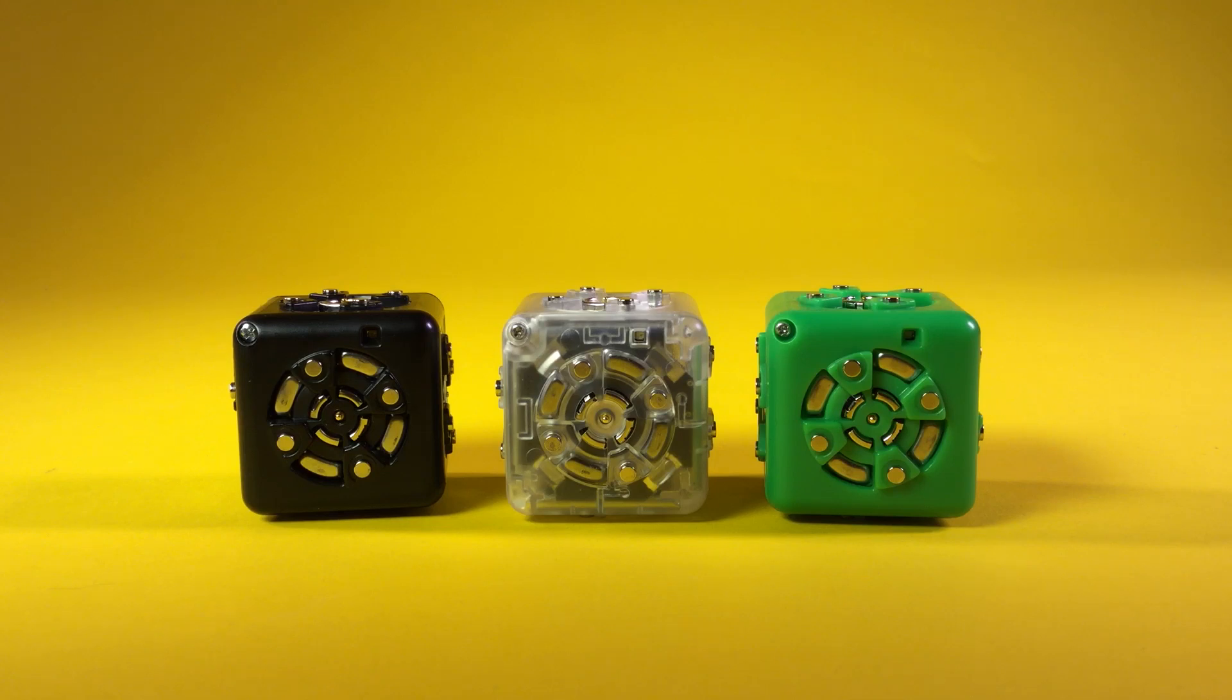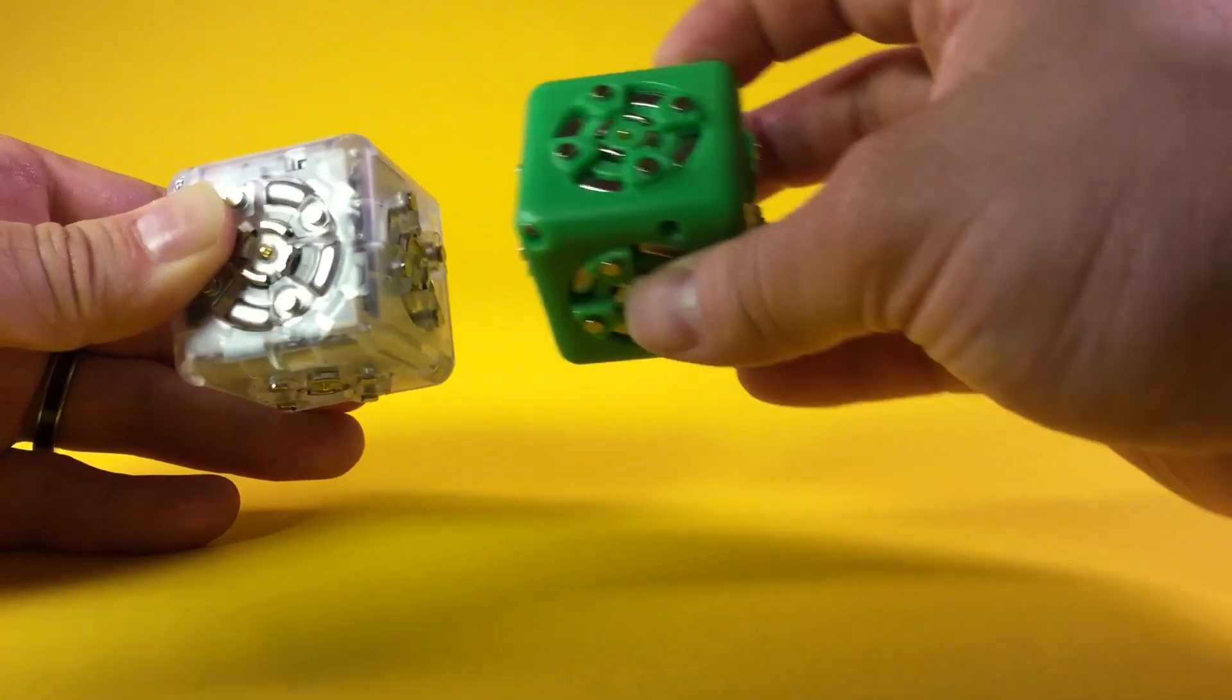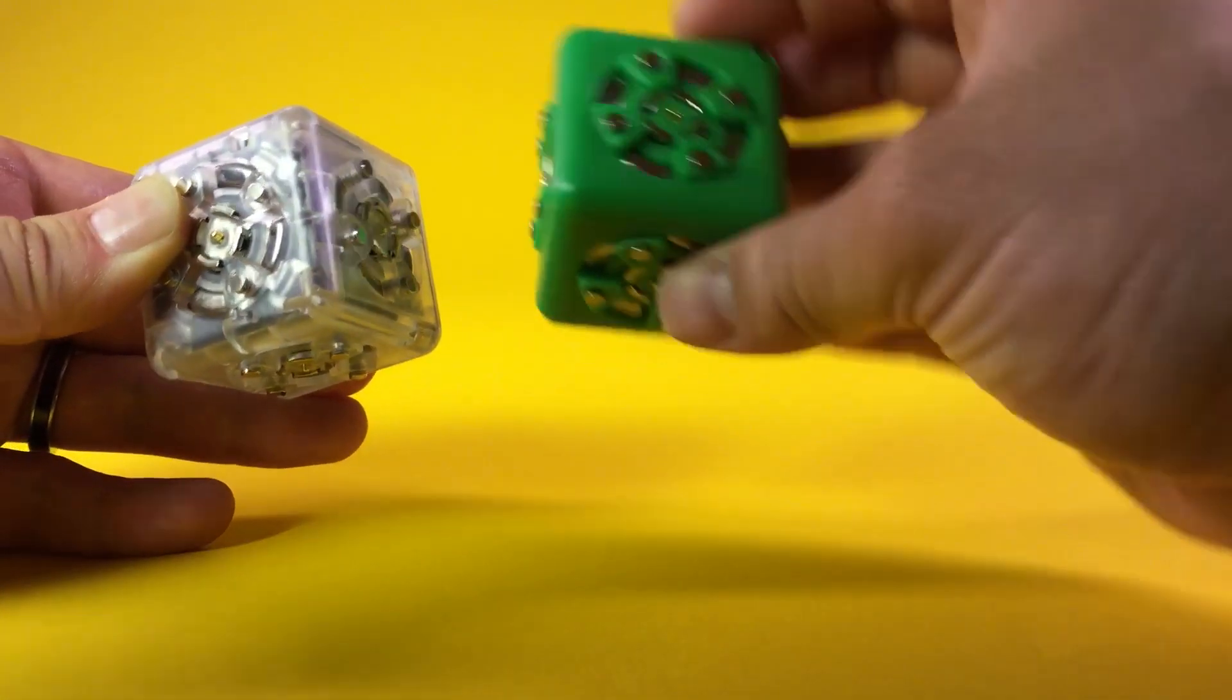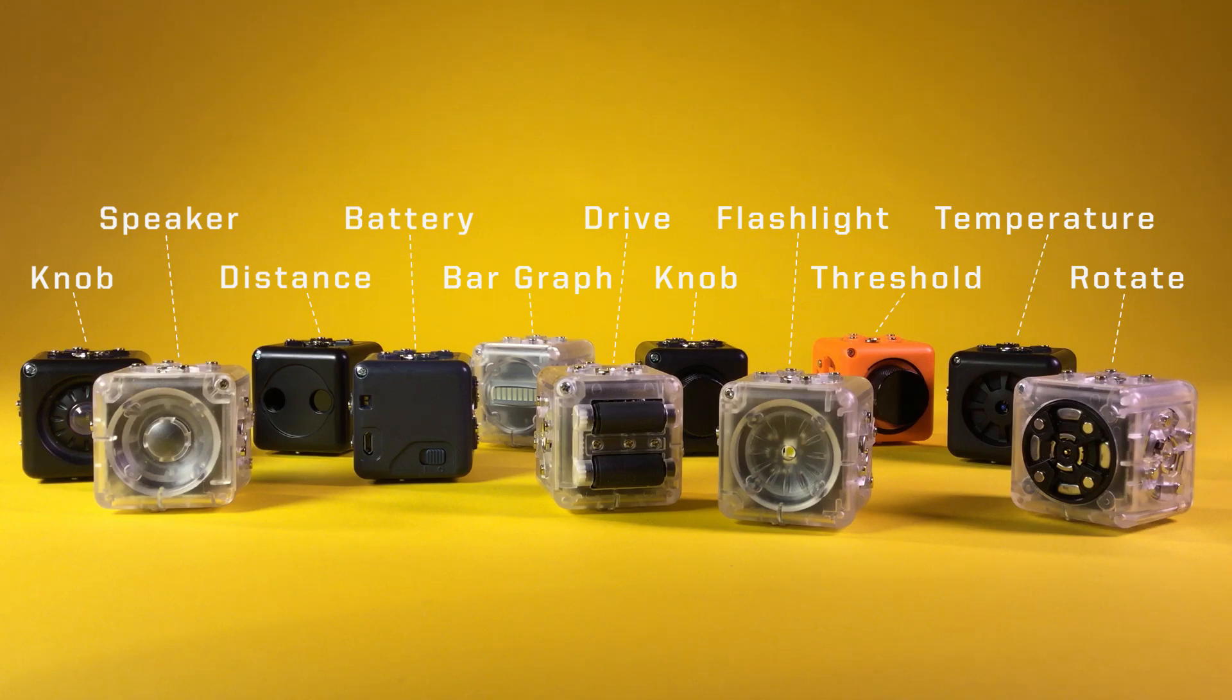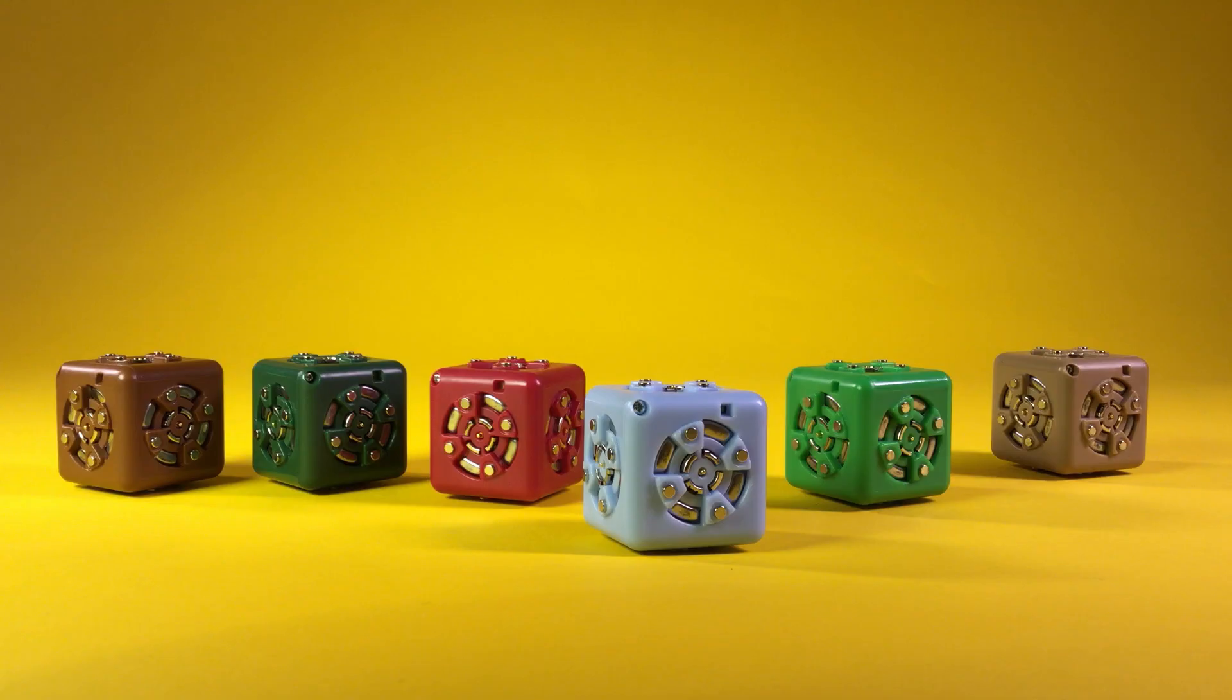Number 4. Cubelets connect using magnetic faces. You don't need to worry about orientation because they connect with any alignment. Most cubelets have five connection faces and one special face, which identifies the function of that cubelet. Others have six connection faces and their function is indicated by their color.